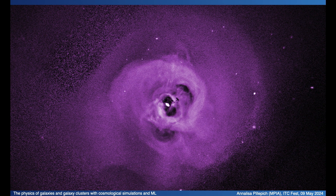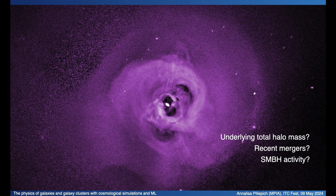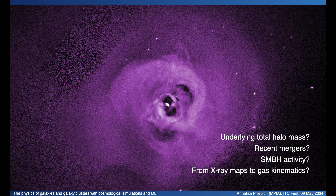Jumping two or three orders of magnitude higher in mass, this is the center of Perseus, a galaxy cluster seen across about 200 kiloparsecs on a side. This is a residual map of X-ray surface brightness from Chandra. Even a map like this has many open questions. For example, for almost all clusters, can we say with accuracy what is the total underlying halo mass? What about recent mergers, the activity of the supermassive black hole that appears to have left visible imprints with cavities and shocks? Or can we infer the gas kinematics from X-ray imaging alone without high-resolution spectroscopy?